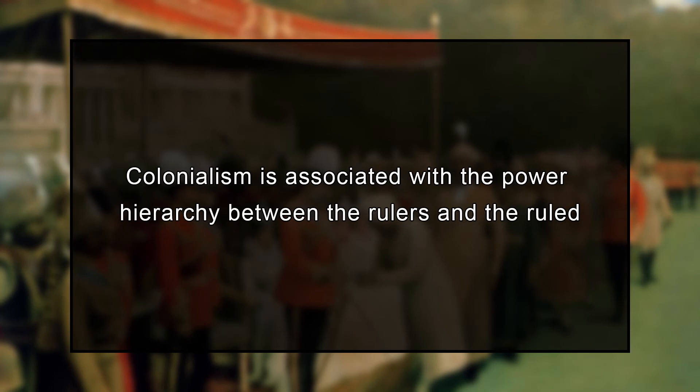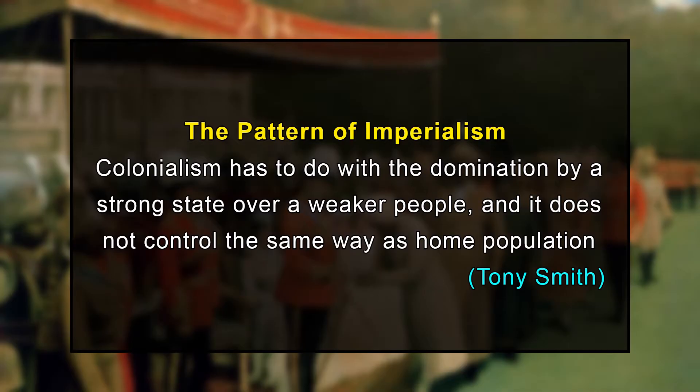Colonialism is associated with power hierarchy between the rulers and the ruled. Colonialism refers to intergroup domination in a culturally heterogeneous society. Tony Smith, in his work The Pattern of Imperialism, points out that colonialism involves domination by a strong state over a weak people, not controlling them the same way as the home population. By this definition, colonialism began around 1500 and lasted until about 1950, when most colonial territories gained political independence.